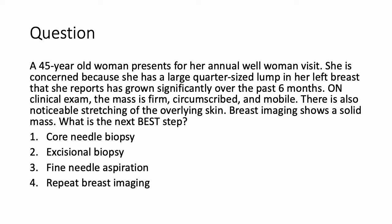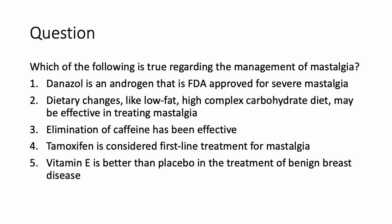Clinical question: A 45-year-old woman presents for her annual visit concerned about a large quarter-sized lump in her left breast that has grown significantly over the past six months. On exam, the mass is firm, circumscribed, and mobile, with noticeable stretching of the overlying skin. Breast imaging shows a solid mass. The next best step is excisional biopsy. This is characteristic of a phylloides tumor — it behaves like a fibroadenoma in terms of being firm, circumscribed, and mobile, but the significant growth over six months and skin stretching are key. Excisional biopsy is preferred over core needle biopsy, which might only diagnose a fibroadenoma.